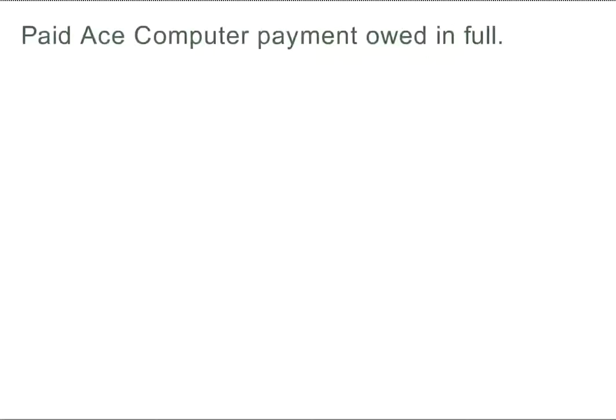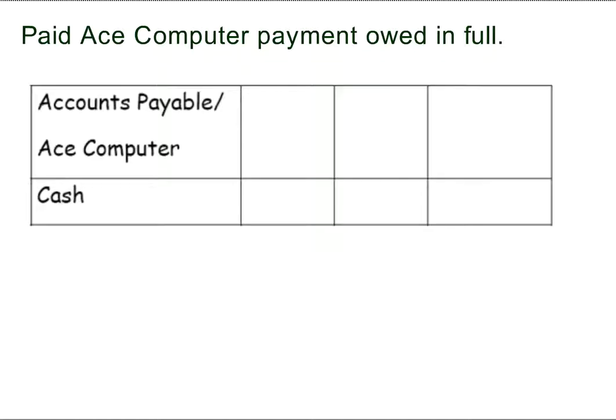The transaction is you paid Ace Computers payment in full. What accounts are used? The Accounts Payable Ace Computer and Cash. The Accounts Payable is a liability account and Cash is an asset account. The liability is decreasing and Cash is decreasing.